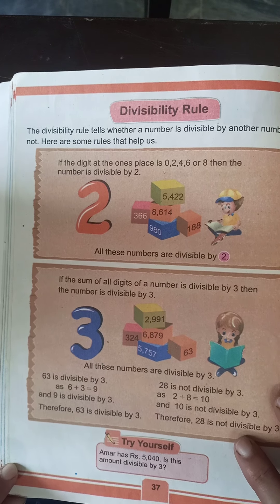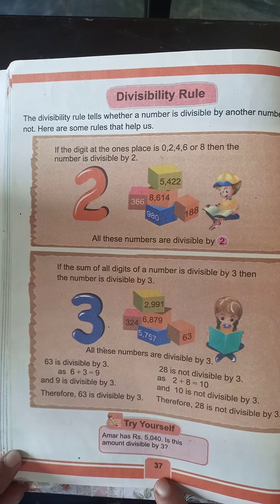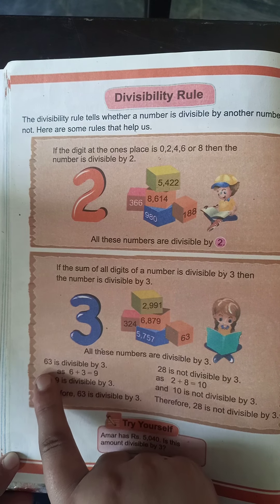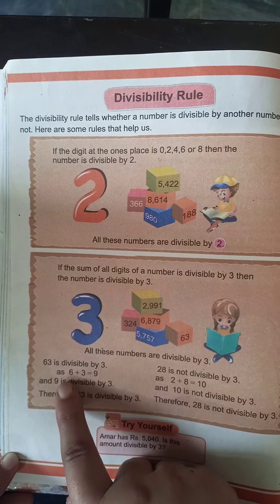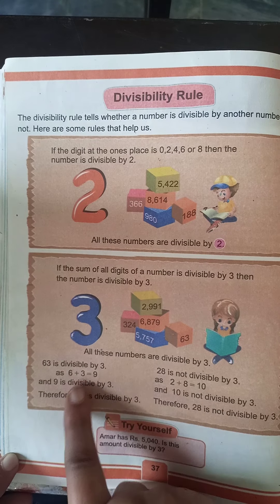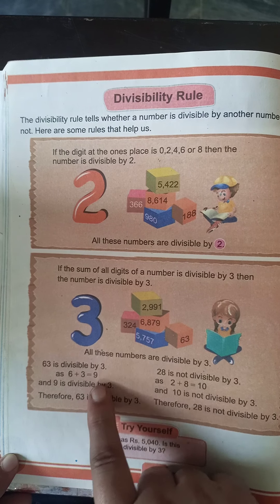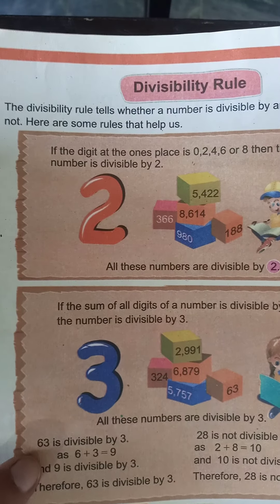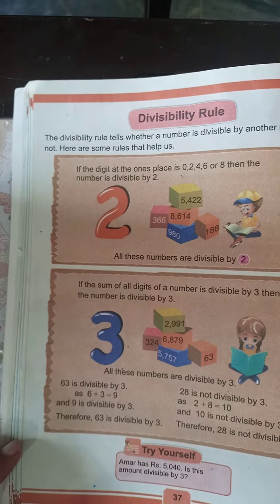Aap uska sum find kaise karenge — dekhe. Yahan pe already aapke book page 37 pe bahut achi examples given hain. Just take the example: 63 is divisible by three. How? Six plus three is nine. Six plus three is nine means question ke number ko unhone plus kar diya, to six plus three is equal to nine. It means nine is divisible by three, so 63 is also divisible by three.